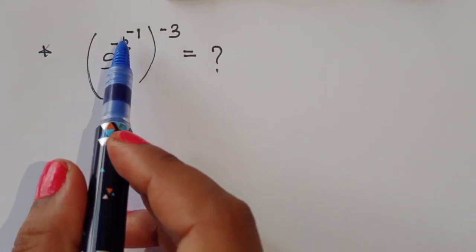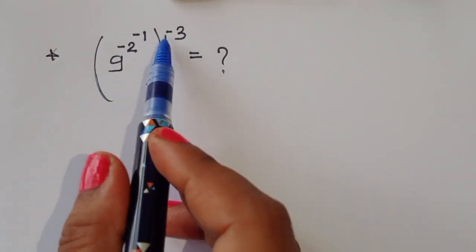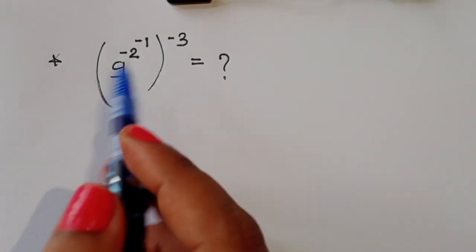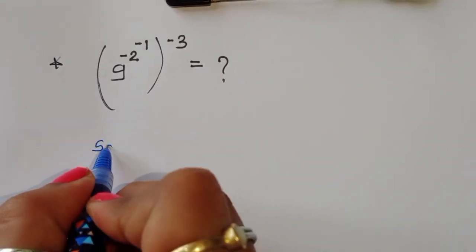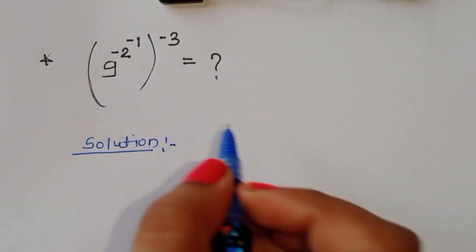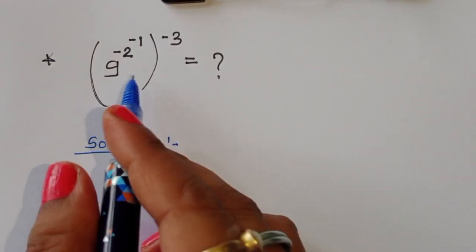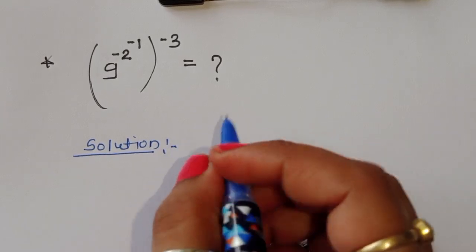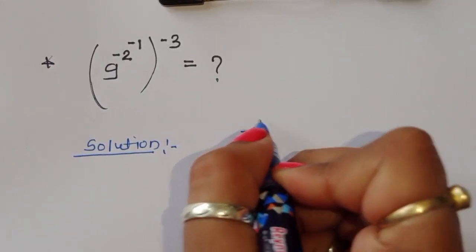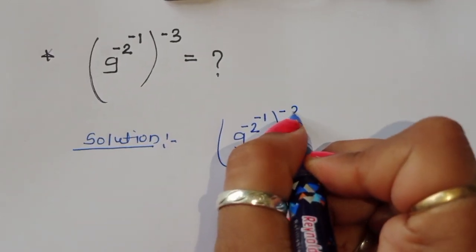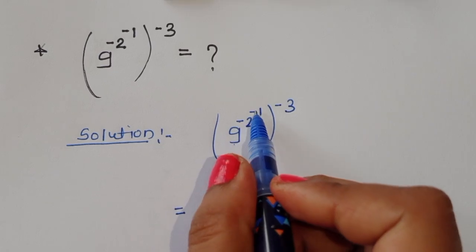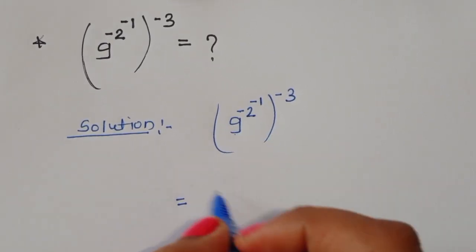The first question is: 9 raised to the power (minus 2 raised to the power minus 1), all raised to the power minus 3, is equal to what? We have to find the value of this expression. In this video we will cover two questions. This is the first one, so let's start.